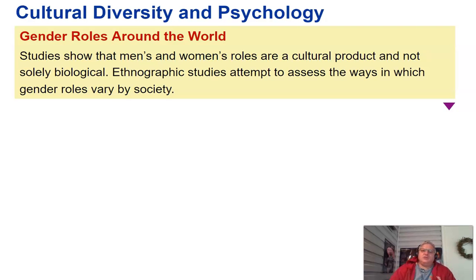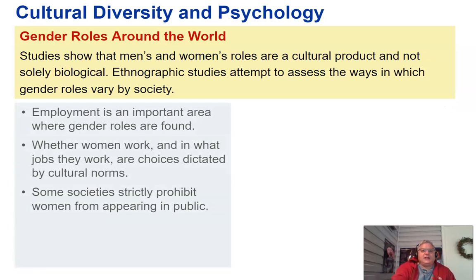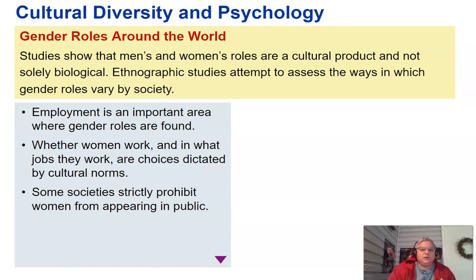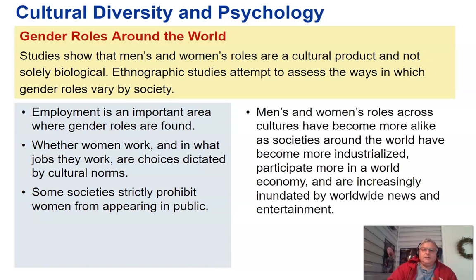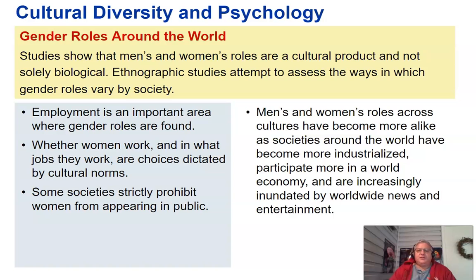Studies show that men and women's roles are a cultural product and not solely biological. Ethnographic studies attempt to assess the ways in which gender roles vary by society. Employment is an important area where gender roles are found — whether women work and what jobs they hold are choices often dictated by cultural norms, and some societies strictly prohibit women from appearing in public. Men and women's roles across cultures have become more alike as societies around the world have become more industrialized, participate more in the world economy, and are increasingly exposed to worldwide news and entertainment.